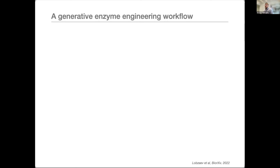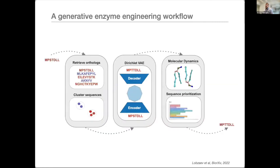We started a project in January with three aims: developing generative methods to design better ERTs, establishing a sustainable platform for ERT manufacturing, and releasing everything as open source. Funded by a UKRI BBSRC fellowship for the next four years. The workflow takes a wild-type sequence, retrieves orthologs, clusters sequences to build datasets for training our machine learning model, then uses it to design new sequences that go through molecular dynamics simulations and sequence prioritization steps before selecting the best candidates for lab testing.